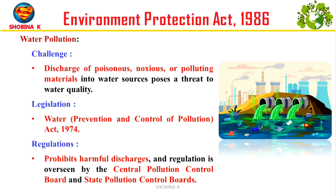Water pollution happens when harmful substances get into water sources like rivers or lakes, making the water unsafe. To tackle this, there is the Water Prevention and Control of Pollution Act, 1974. This law prohibits putting harmful substances into water. The Central Pollution Control Board and State Pollution Control Boards make sure people follow these rules.